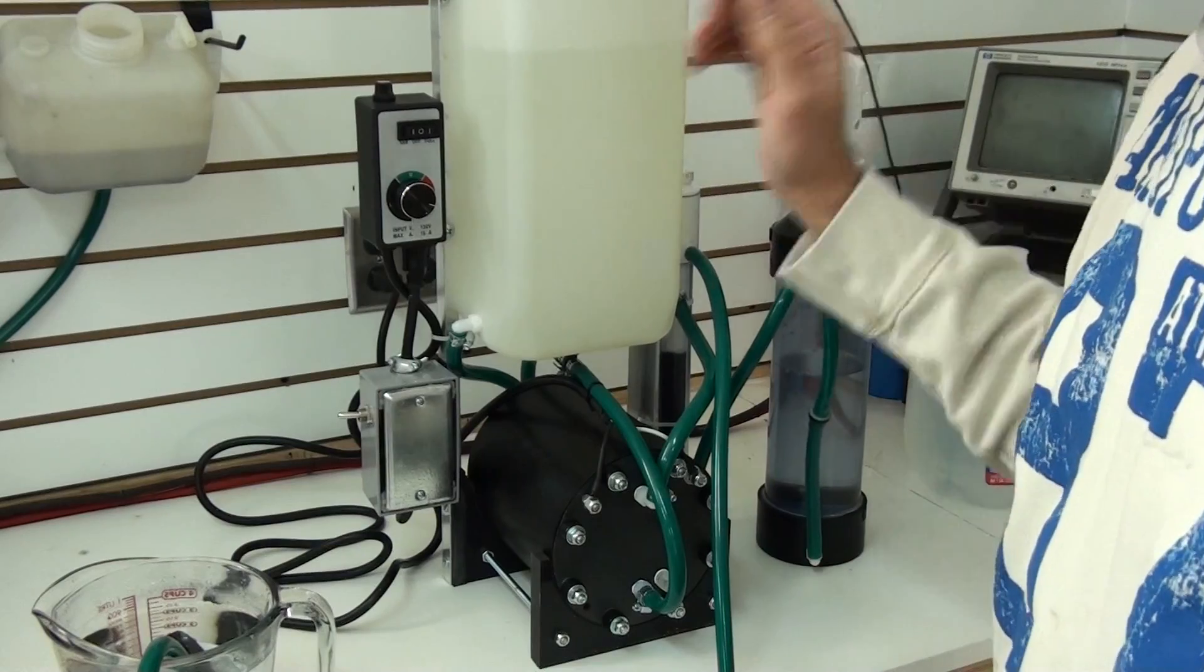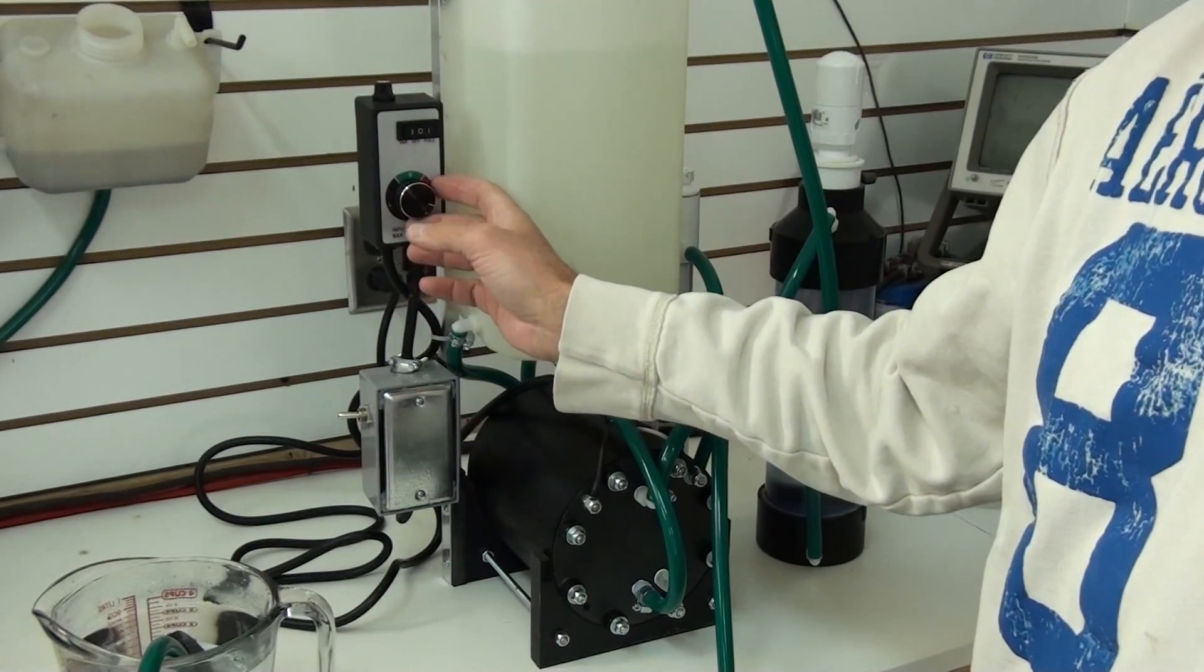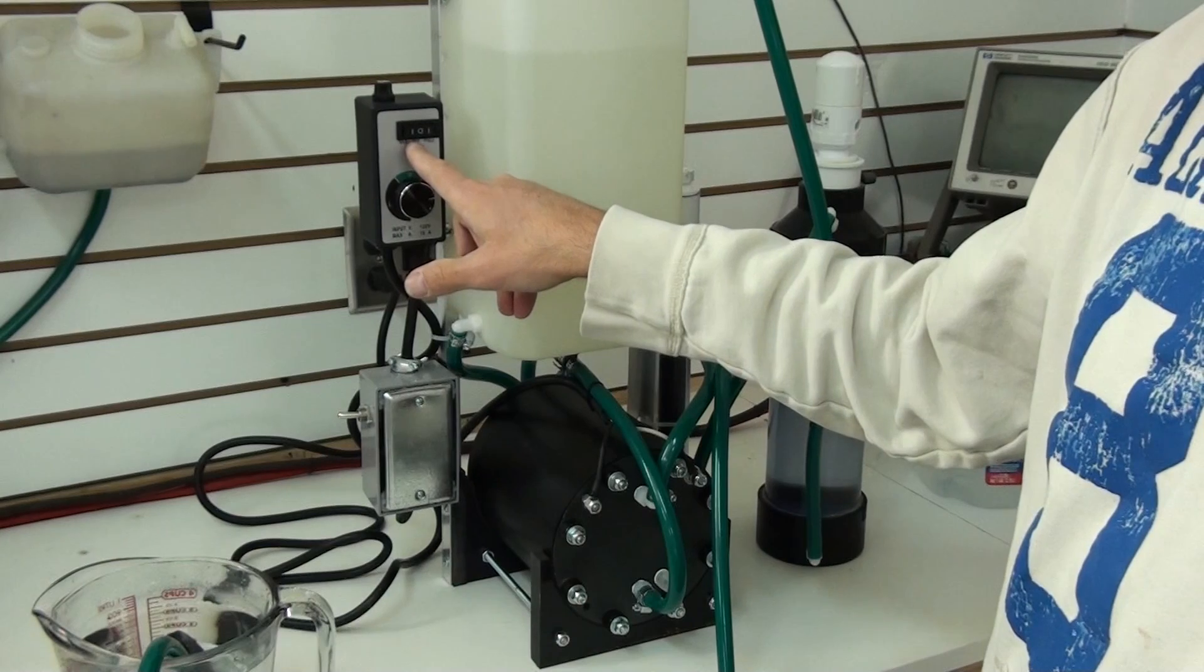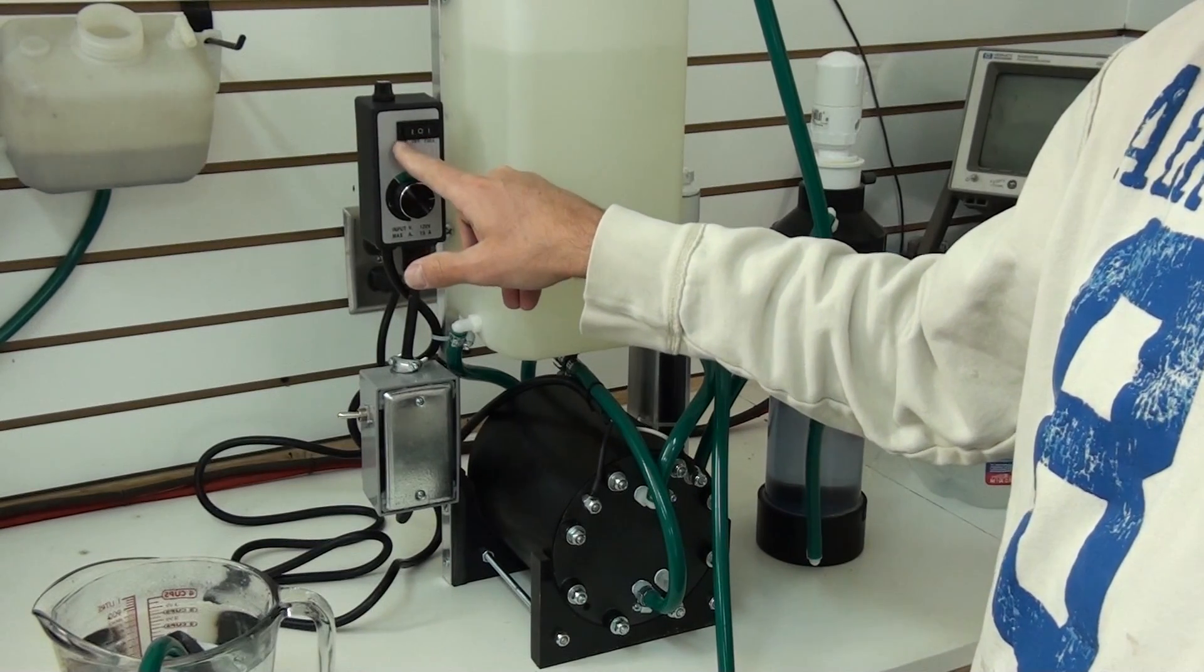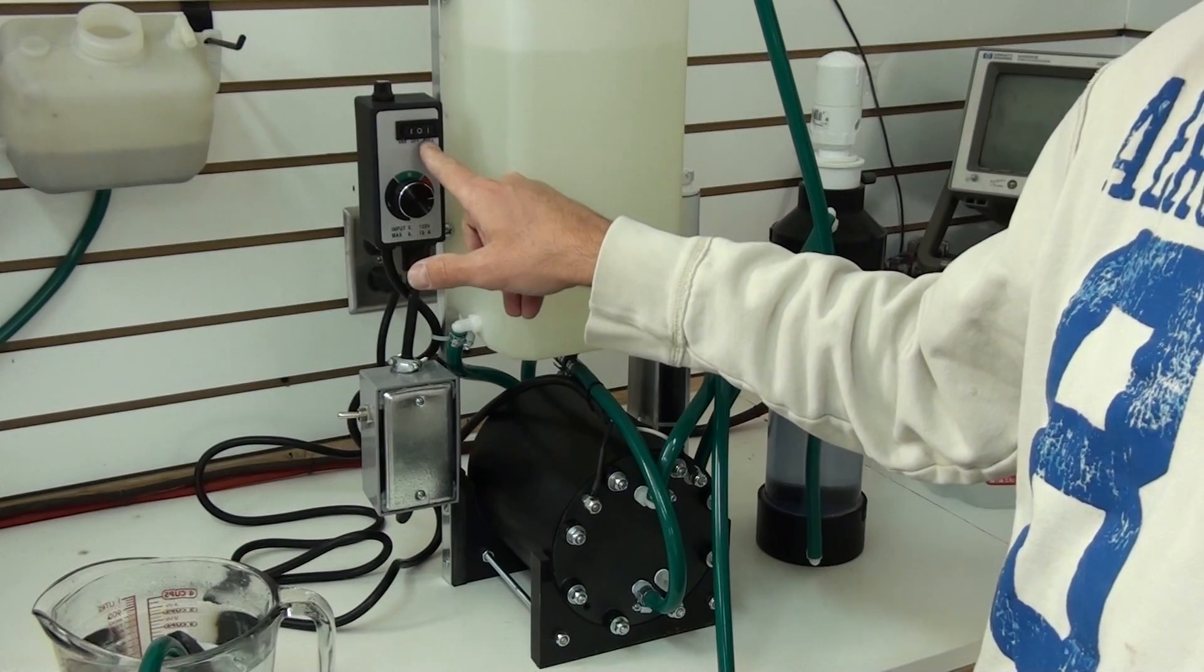On this side we've got our on off switch and then we have our variable control here. You can also control it from the switch too. You've got off position variable and then a full power setting.